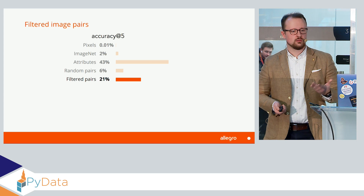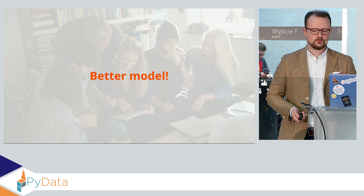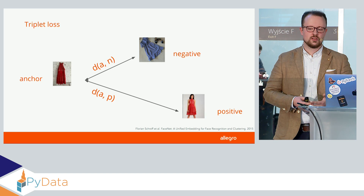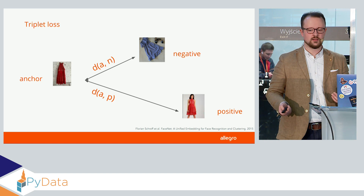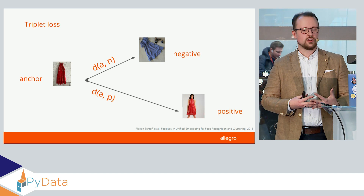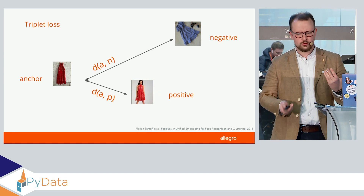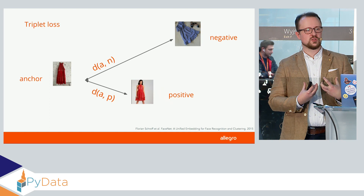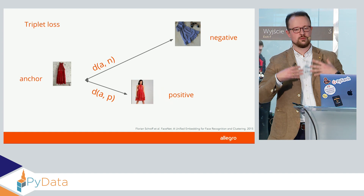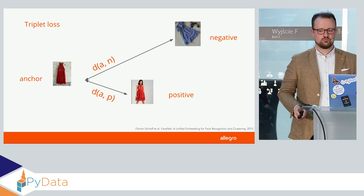That's still worse than 33%, so we have better data now. Let's go to a better model. We can use something called triplet loss, where instead of providing pairs for training we'll provide triplets. We have an anchor, a positive, and a negative. The anchor is often referred to as the query. We have a positive that's similar to our query, and a negative with an item that's different. The idea is that we would like to move the embedding of the positive and the anchor as close as possible to each other, and then push the negative further away.